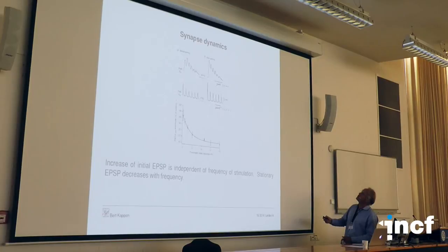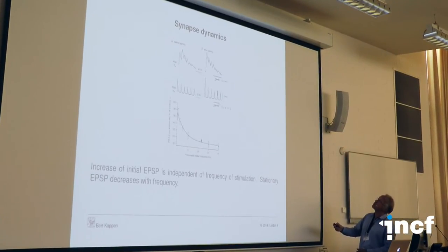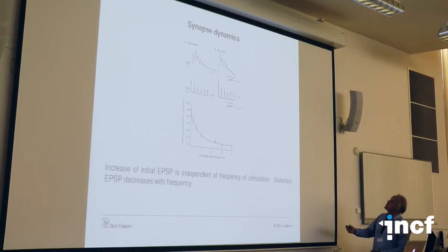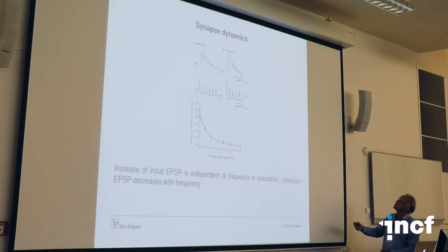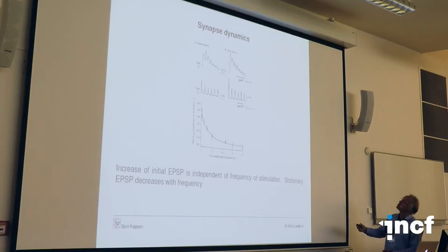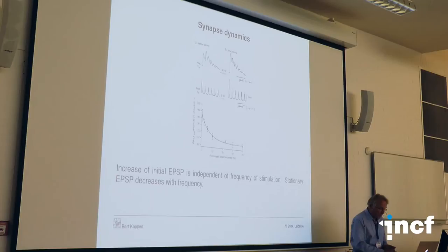Before pairing you see this spike and then it does something like this, and after pairing the first spike gets enhanced. That is independent of frequency. But the asymptotic response depends very much on the frequency of stimulation. If the frequency is high then this goes down to a low value asymptotically; if the frequency of stimulation is low then this goes down to a higher value. So the asymptotic value decreases with frequency.